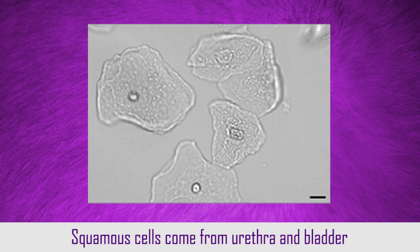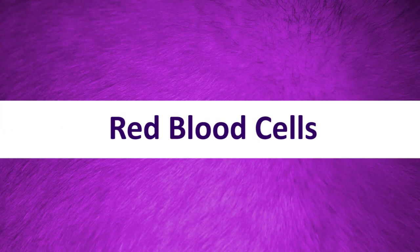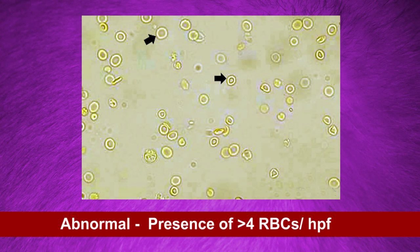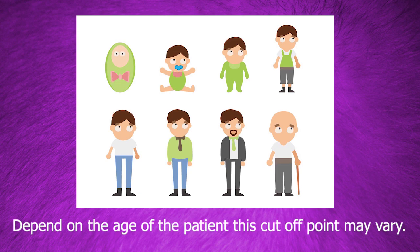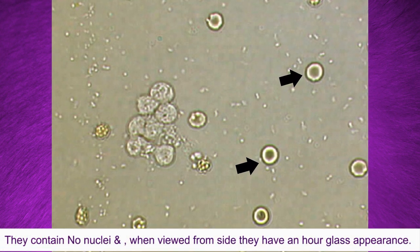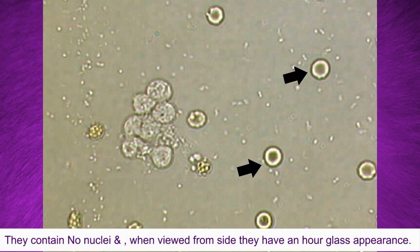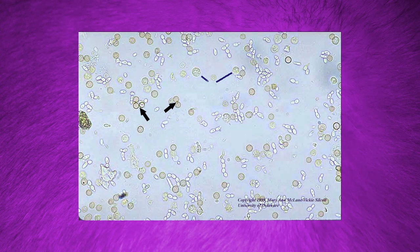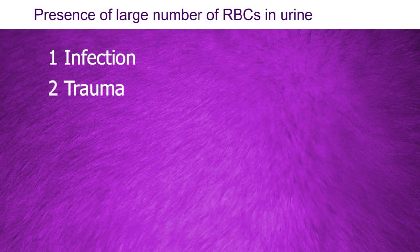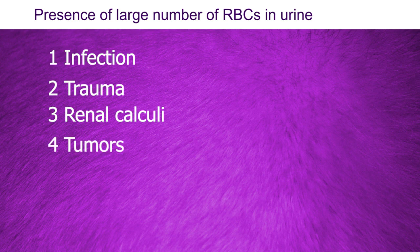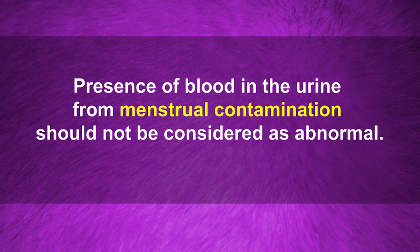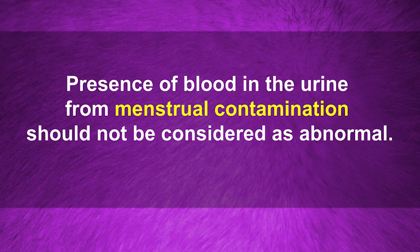Squamous cells are very large and have a flat, prominent nucleus. Red blood cells: more than four red blood cells per high power field is considered abnormal; however, this cutoff may vary depending on the age of the patient. Red blood cells contain no nuclei and when viewed from the side they have an hourglass appearance. A large number of red blood cells in urine may suggest infection, trauma, or renal calculi.